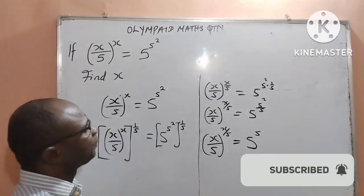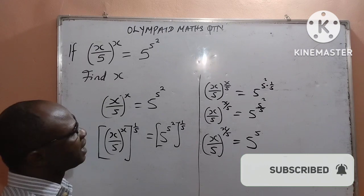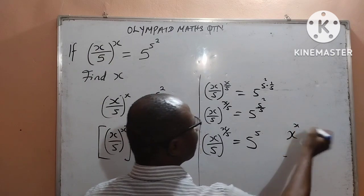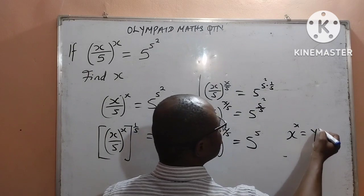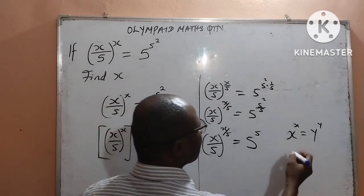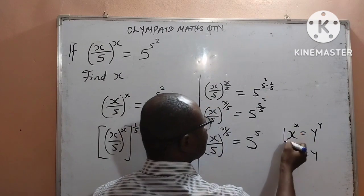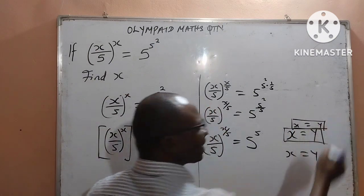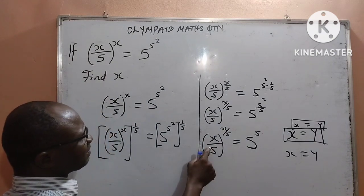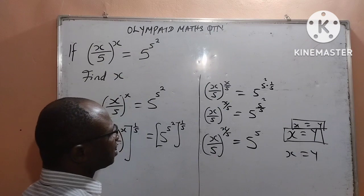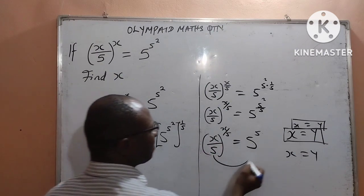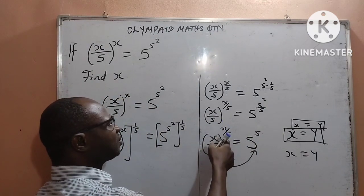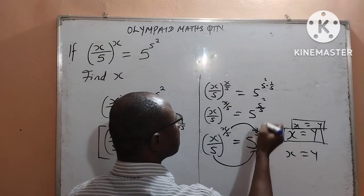Now, looking at this, I will apply the law of indices that talks about: if I have x to the power of x equal to y to the power of y, then therefore x will be equal to y. That is, the base will be equal to the base, and of course the power should be equal to the power. So my base on the left, x all over 5, should equal the base on the right, which is 5. And the power x all over 5 should equal the power on the right, which is also 5.